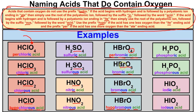Bromate bonded to hydrogen gives bromic acid (three oxygens). Bromite bonded to hydrogen has two oxygens and becomes bromous acid. Hypobromous acid has one less oxygen than bromous acid. Perbromic acid has one extra oxygen compared to bromic acid. Similarly: phosphoric acid versus phosphorous acid (one less oxygen), and iodic acid versus iodous acid (one less oxygen). Those are the rules for naming oxygen-containing acids.